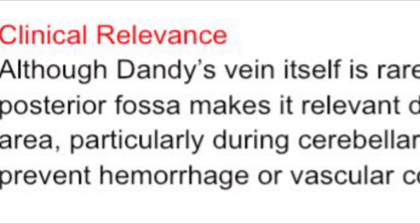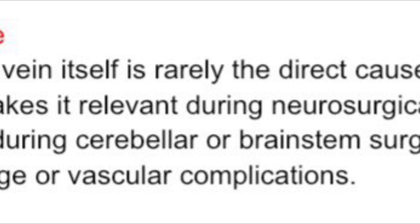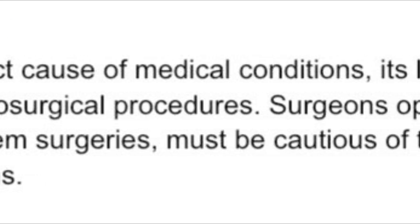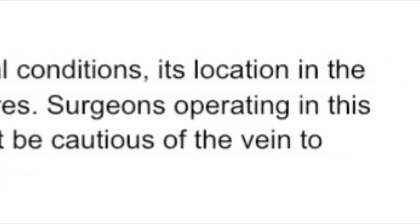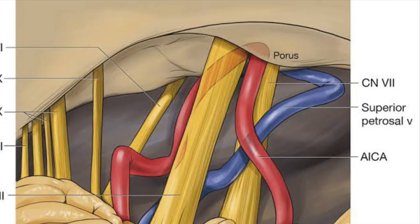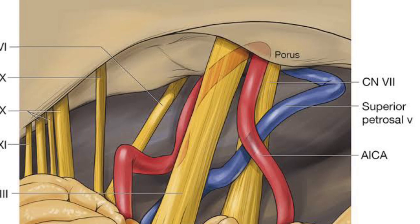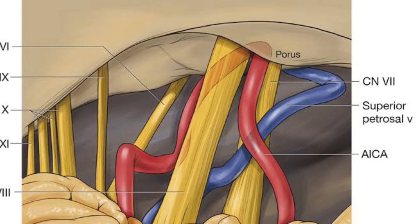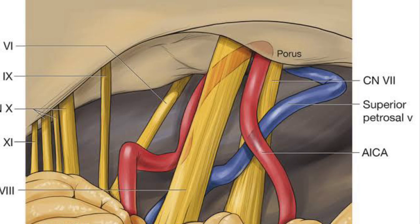Although Dandy's vein itself is rarely the direct cause of medical conditions, its location in the posterior fossa makes it relevant during neurosurgical procedures. Surgeons operating in this area, particularly during cerebellar or brainstem surgeries, must be cautious of the vein to prevent hemorrhage or vascular complications.